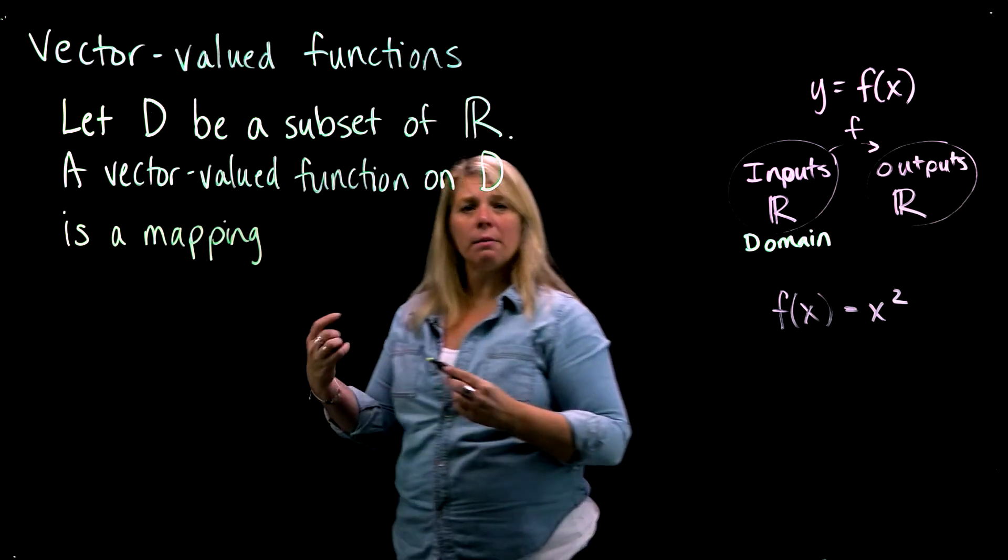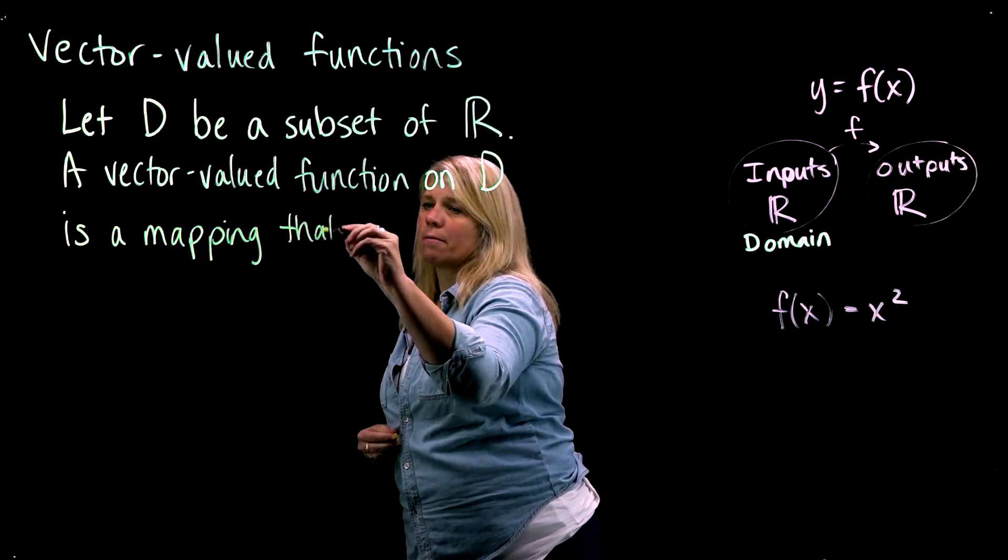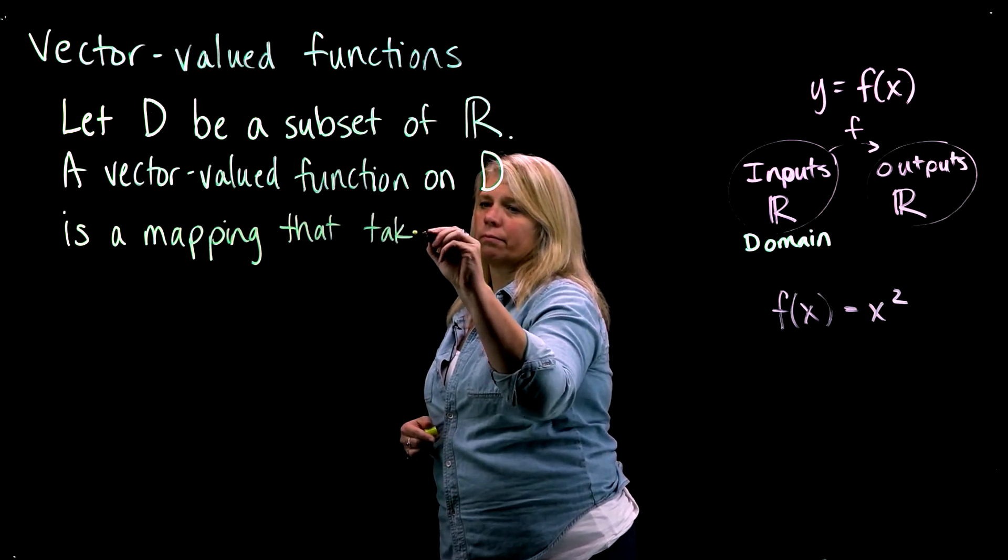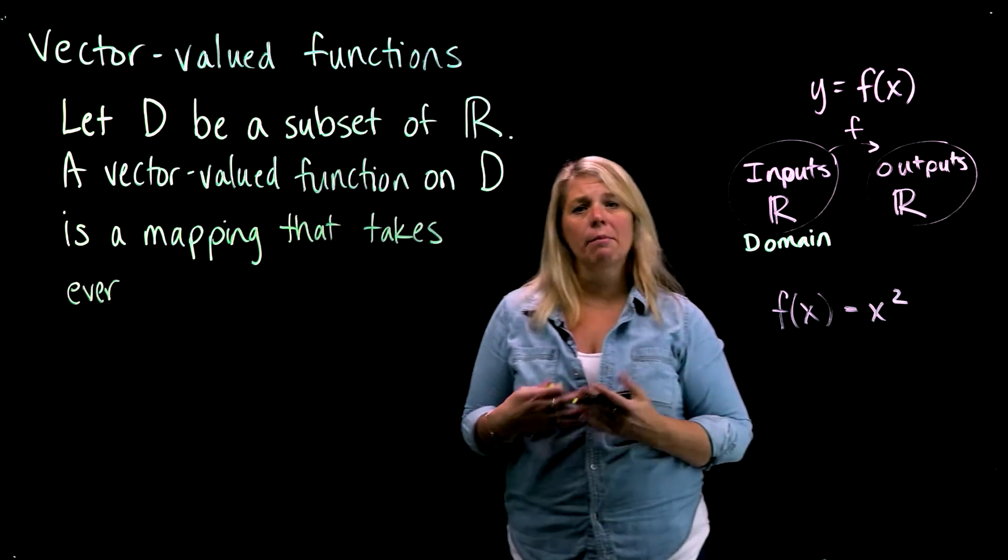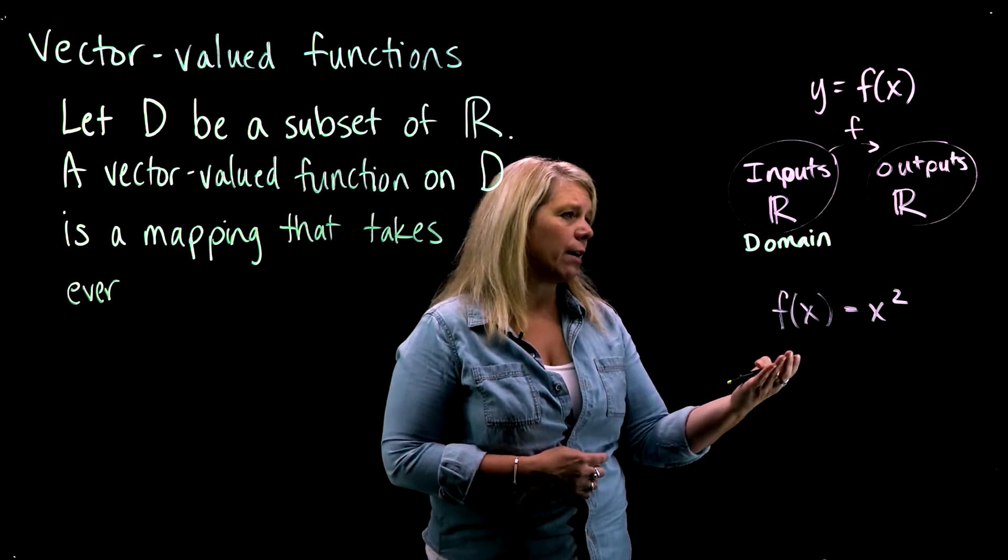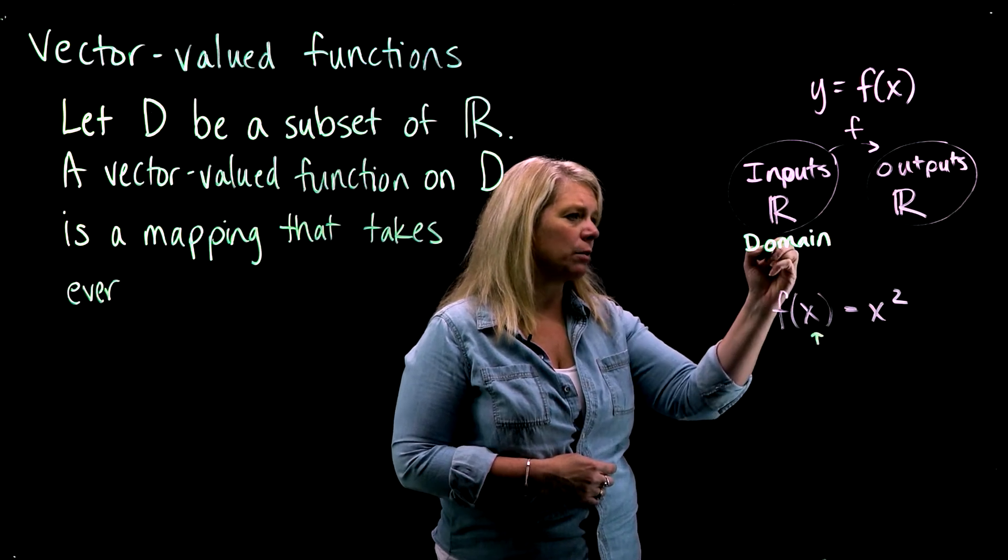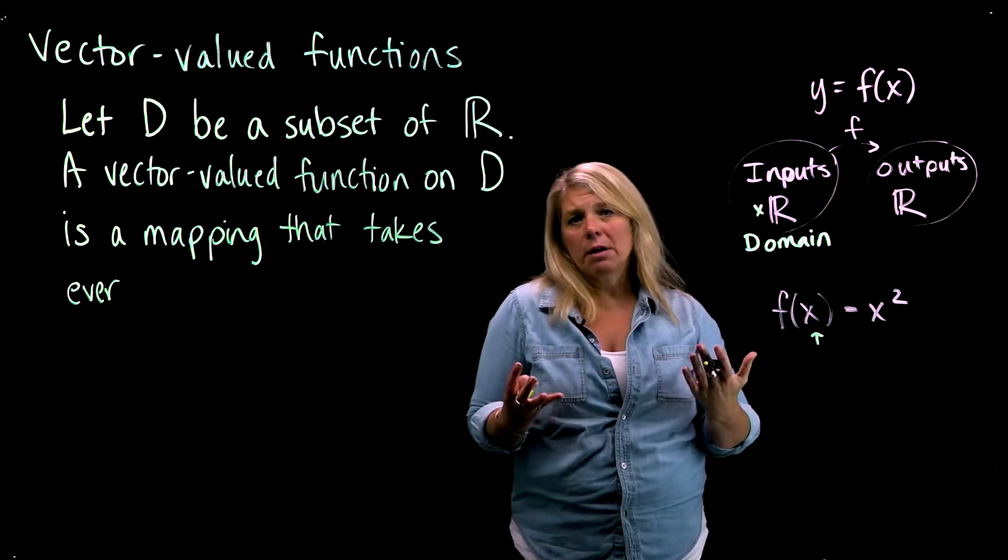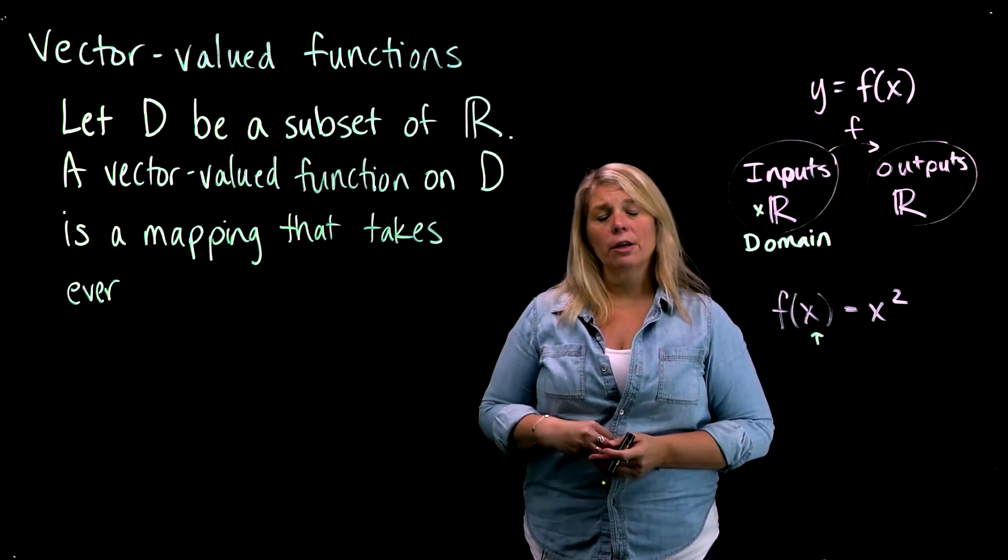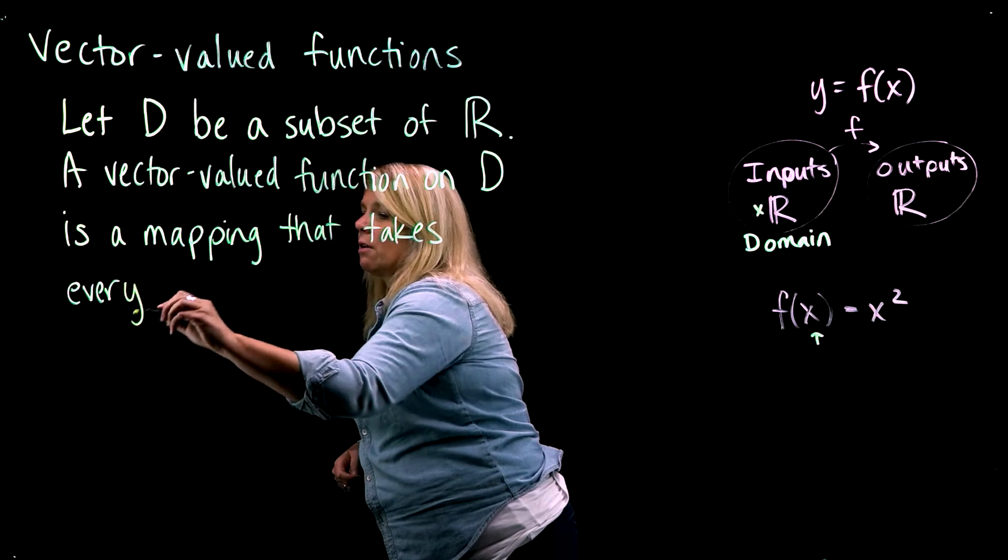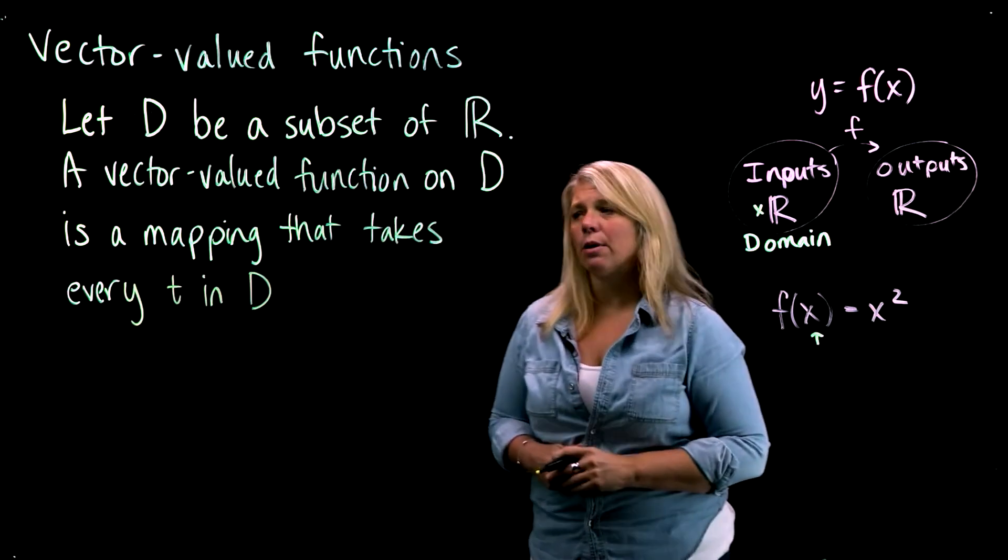That takes every object in D. When we think about ordinary functions that you've worked with before, the objects in that domain, we often call those things x's. But you can use other letters. For vector-valued functions, we often use t for a parameter. So every t that is in D—t would be any real number in D.